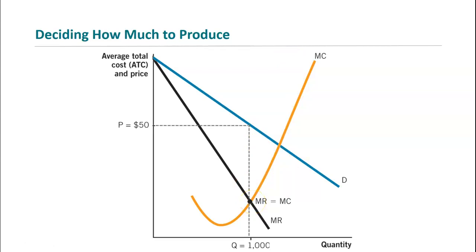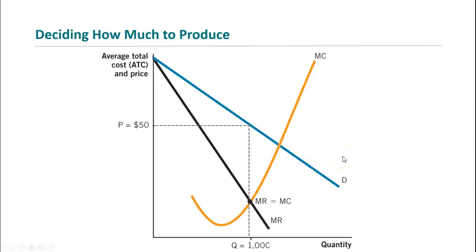In a perfectly competitive market, the firm faces a flat demand curve because customers are only willing to pay one price — the market price — no matter how much you produce. So the demand curve equals the price, which equals marginal revenue. You have one line representing demand, marginal revenue, and price, because there are so many competitors that a single firm has no control over price.